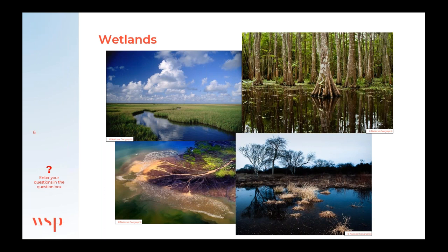Wetlands have many ecosystem services including water purification, groundwater replenishment, water storage, flood control, and carbon sequestration, among others. From a climate change perspective, they also stabilize shorelines, provide storm protection, and sequester carbon if restored.